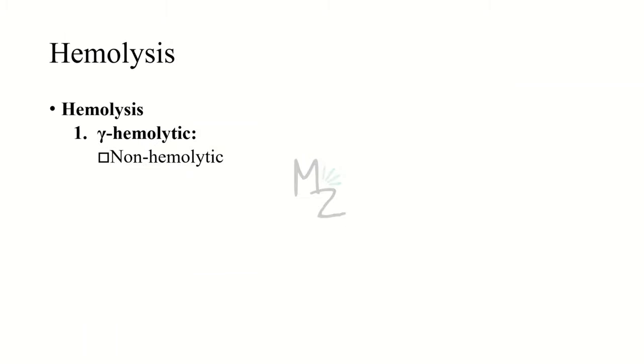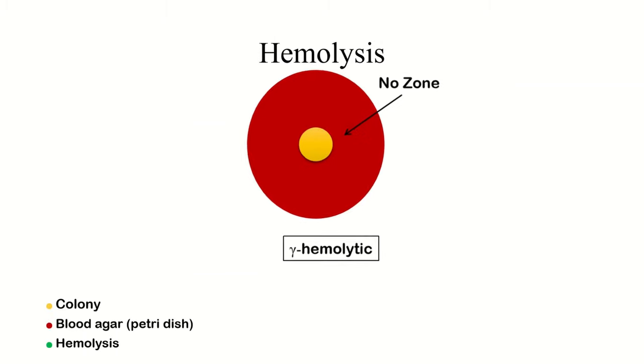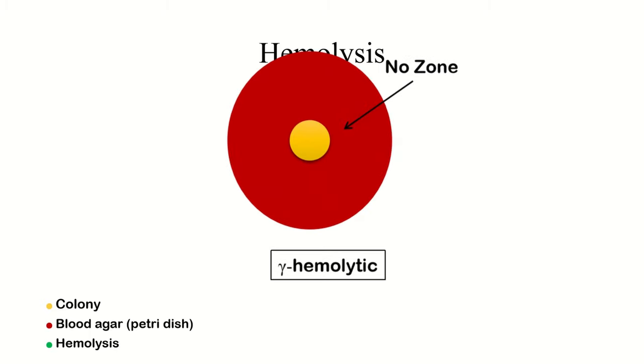Gamma hemolytic means no hemolysis. As you can see there, there's no zone around the colonies. Yellow one is the colony and there's no zone around it. It means there's no hemolysis.